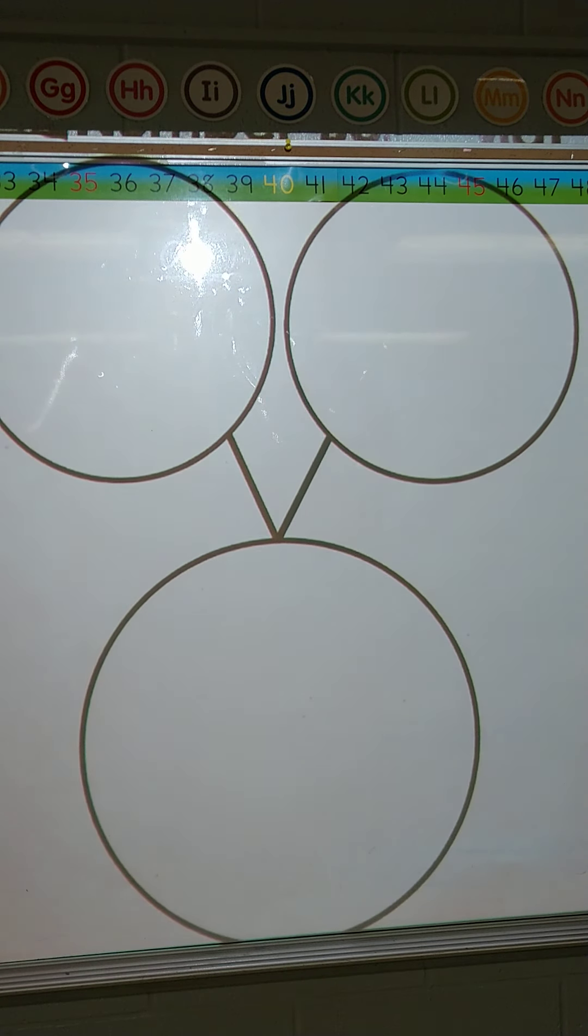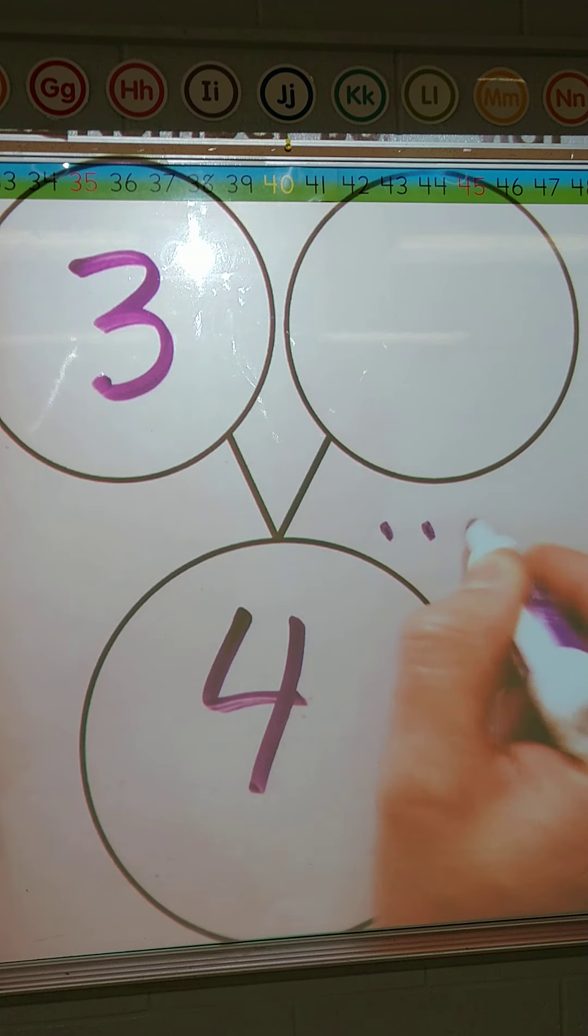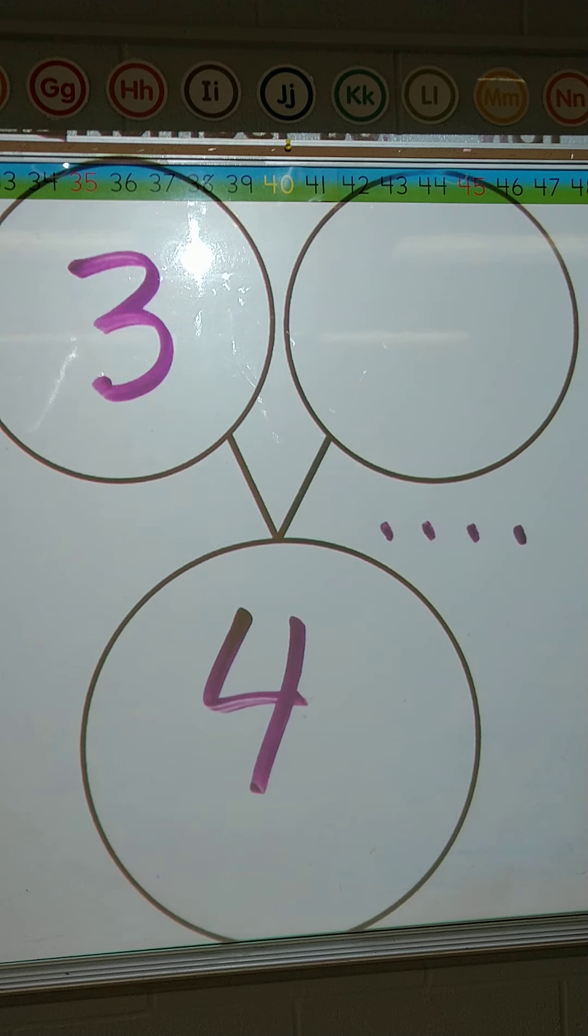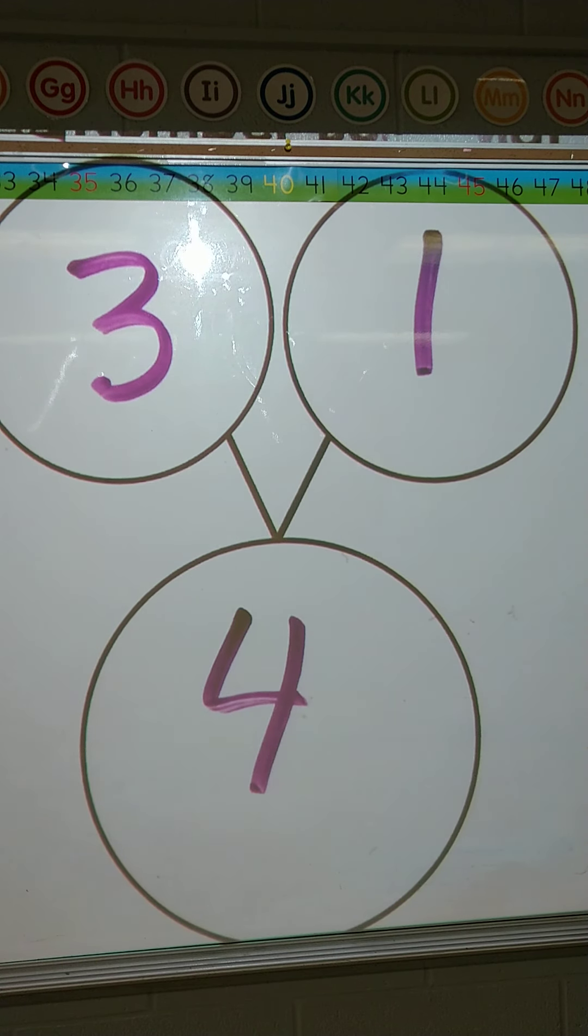Let's do another one. Let's go 4 and 3. So I'm going to do dots a time. 4 dots. And then we know if we take away 3, take away 1, take away 2, take away 3. We have one dot left. So 3 and 1 make 4. Part of 4 is 3, part of 4 is 1. Together they make 4.